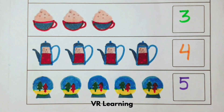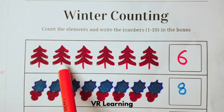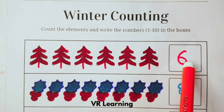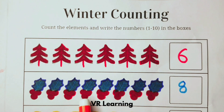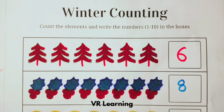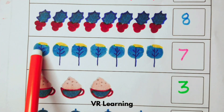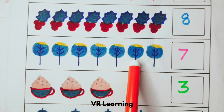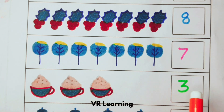Let's repeat again. One, two, three, four, five, six — six. One, two, three, four, five, six, seven, eight — eight. One, two, three, four, five, six, seven — seven. One, two, three — three.